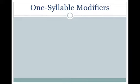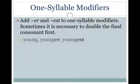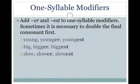Here are some rules for forming the comparative and superlative degrees. Add ER and EST to one-syllable modifiers. Sometimes it's necessary to double the final consonant first. For example: young, younger, youngest; big, bigger, biggest; slow, slower, slowest; tight, tighter, tightest.